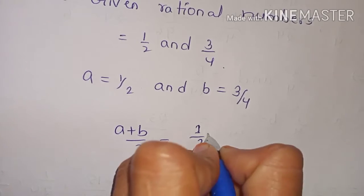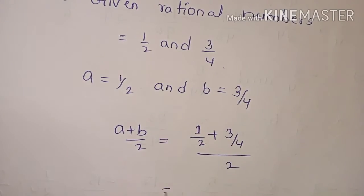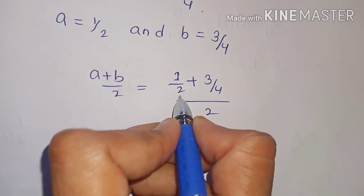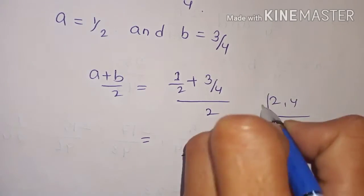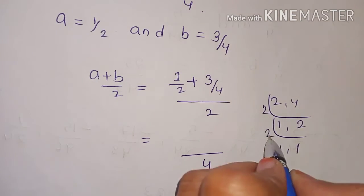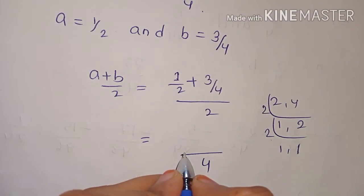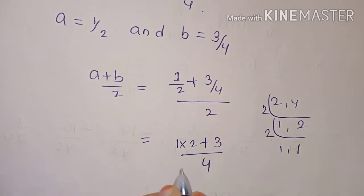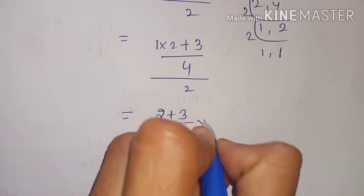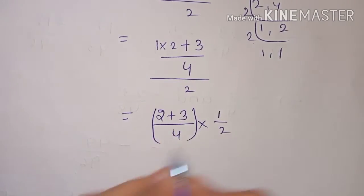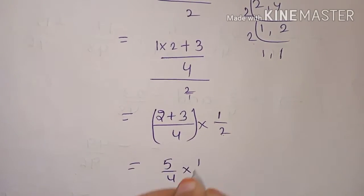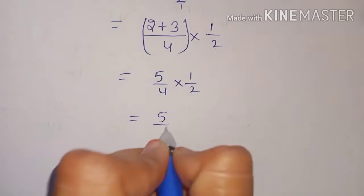Applying the formula a plus b by 2 equals 1 by 2 plus 3 by 4 by 2. The denominators are 2 and 4, so 2 into 4 gives common denominator. Numerator: 1 into 2 plus 3 equals 2 plus 3, which is 5 by 4. Multiplied by 1 by 2, that equals 5 by 8.